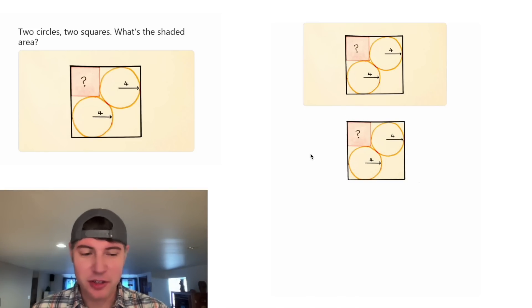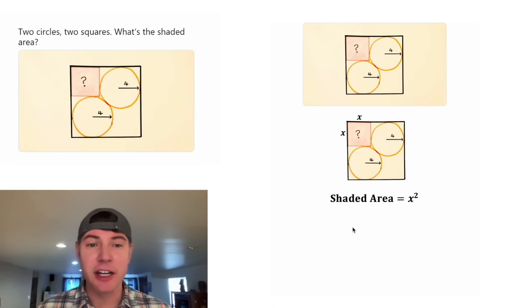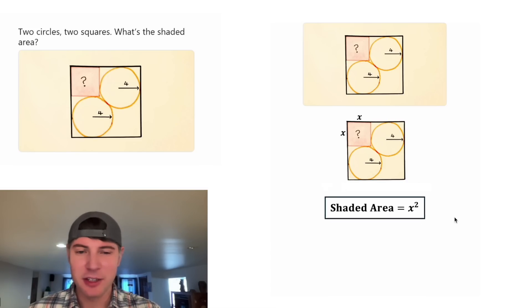Since we're trying to solve for this square, let's give it side lengths of X. And that means that the area of this square, the shaded area, will be equal to X squared. And this will be the answer to our question, so let's put a box around it. And let's move it down here.